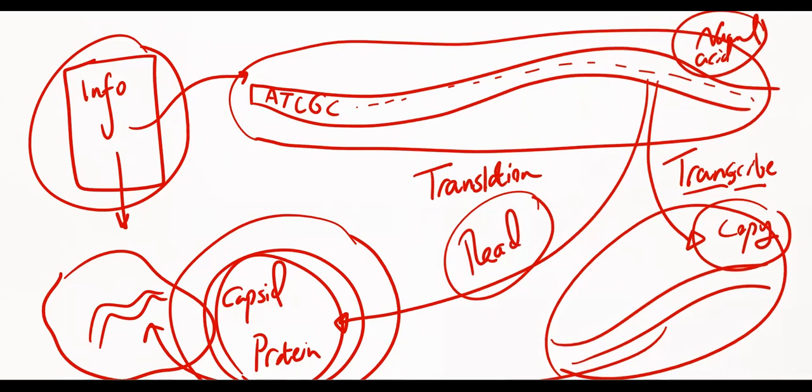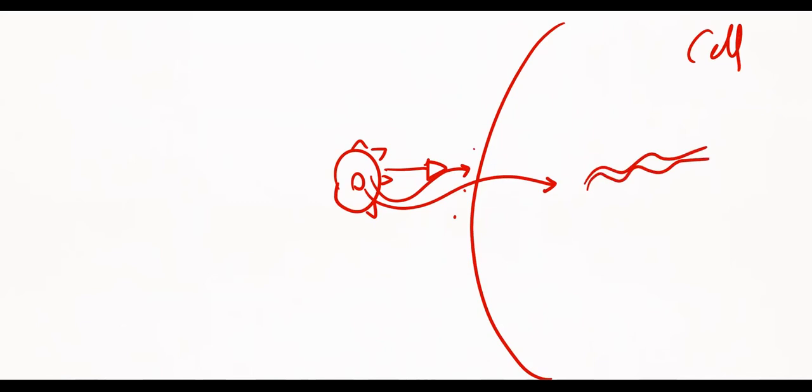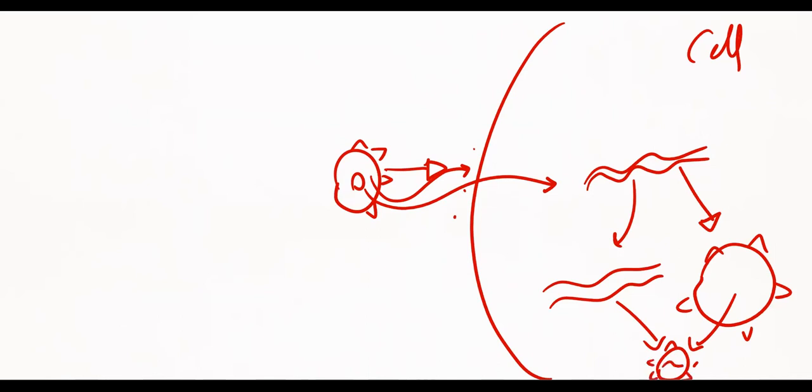So what the cell does, once it gets infected by a virus, the virus uses its capsid to attach to the cell, drill into it, and inject its genetic material. This genetic material is used to translate into another capsule and transcribe another piece of genetic material, and then assemble them together to create another virus. More and more viruses are created, they eventually leave the cell.